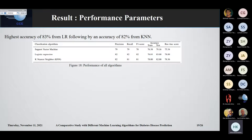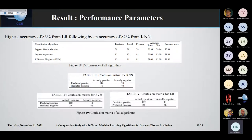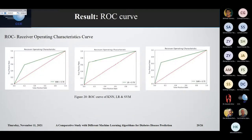The best accuracy for testing we got from logistic regression. KNN also gave a good accuracy of 82 percent. Precision, recall, and F1 are also good for the other algorithms. These are the confusion matrices for our three algorithms. The receiver operating characteristic curve has been shown: the first is for KNN, the second is for logistic regression, and the third is for support vector machine. Here also, logistic regression gave the best, which is 79 percent.